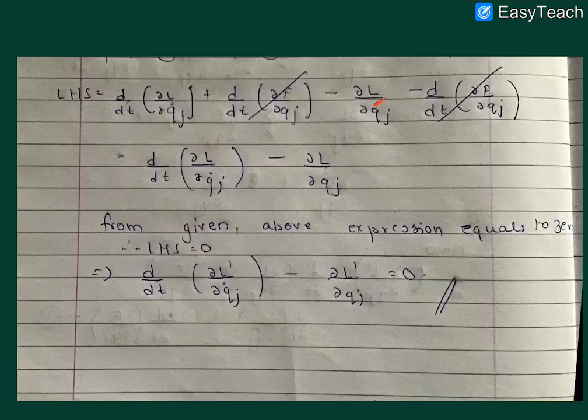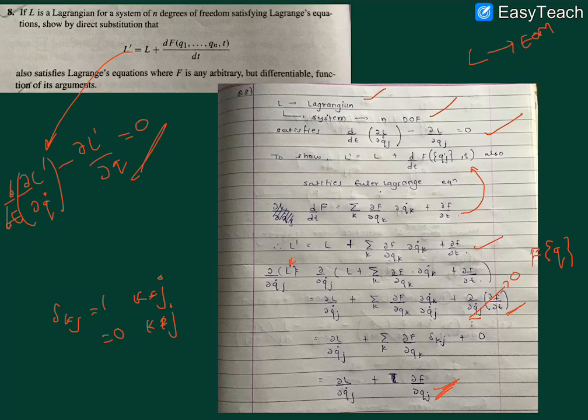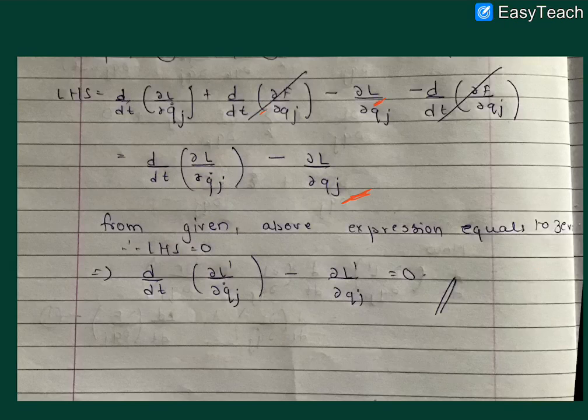We can cancel these two terms. We have this as the final term, and we already know that L is a Lagrangian which satisfies the Lagrangian equations, so this is going to be equal to zero. So finally we can conclude that this equation is zero.